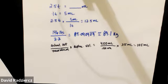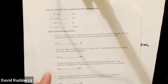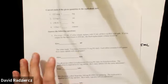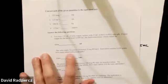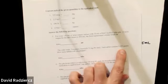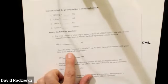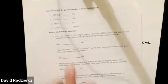Any concerns with calculating tablets? The next question says the order is 75 milligrams and each tablet contains 0.05 grams. How many tablets will you prepare? That's doing your ordered-over-have calculation.